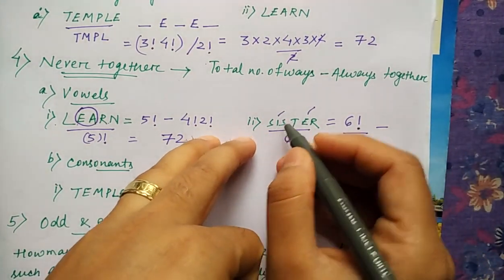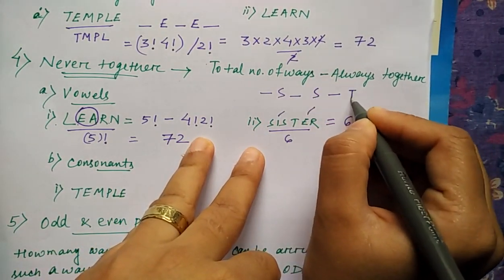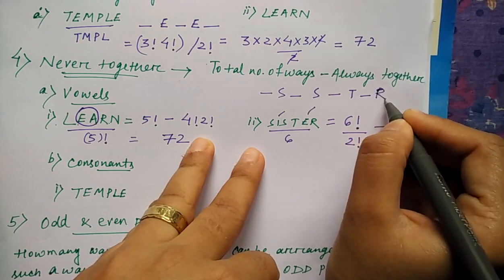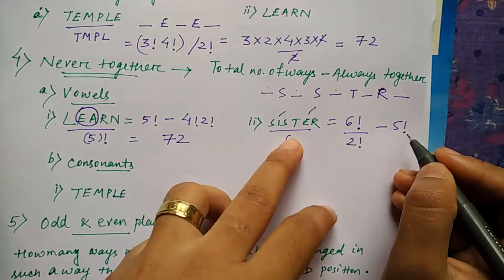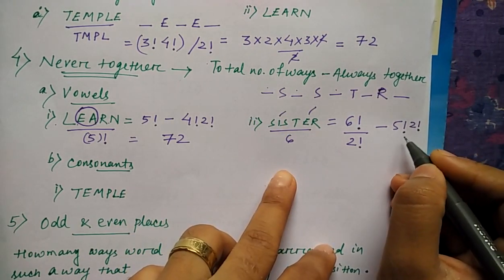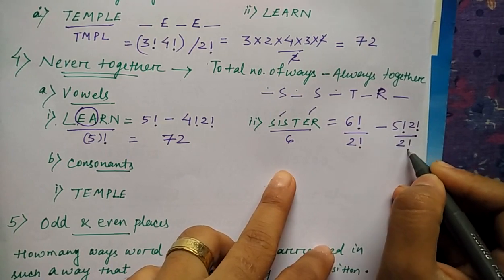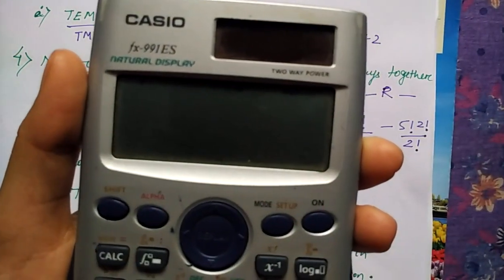So always together means this two will be together. So if you write sister accept the vowels what you can write. You can write like this. So how many places? One, two, three, four, five, total five places. So two, three, four, five, total six into again this two together. Two factorial divided by again repetition is there. So two factorial. So we can calculate it using the calculator.